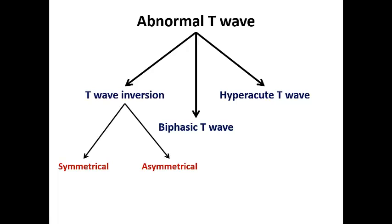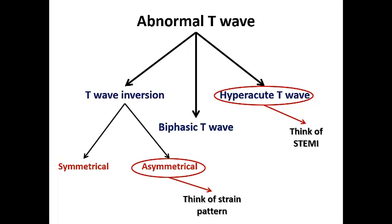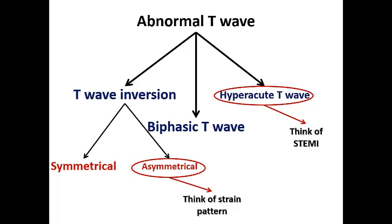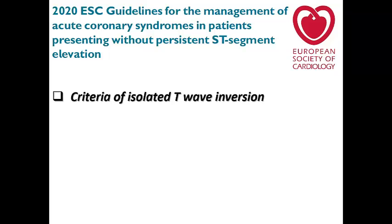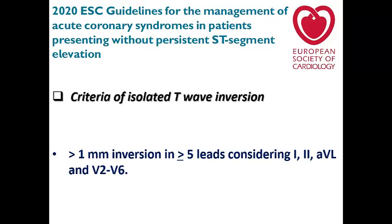Hyperacute T-wave is suggestive of STEMI. Here we focus on biphasic T-wave and T-wave inversion. Asymmetrical T-wave inversion usually occurs in strain pattern, so we focus on biphasic T-wave and symmetrical T-wave inversion in non-ST ACS. In the 2020 guidelines, the criteria for isolated T-wave inversion was more than 1 mm inversion in 5 or more leads, considering leads I, II, AVL, and V2 to V6 — this is the criteria for isolated T-wave inversion to be suggestive of myocardial ischemia.